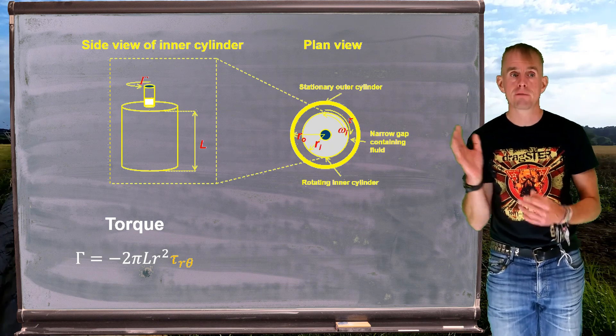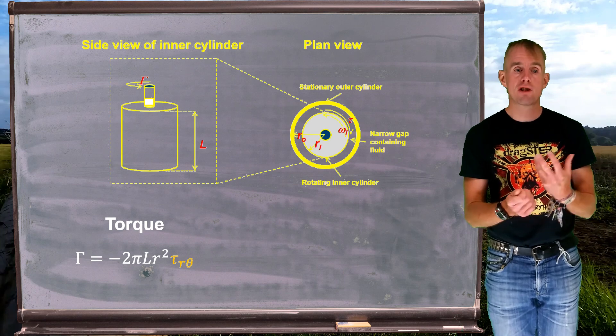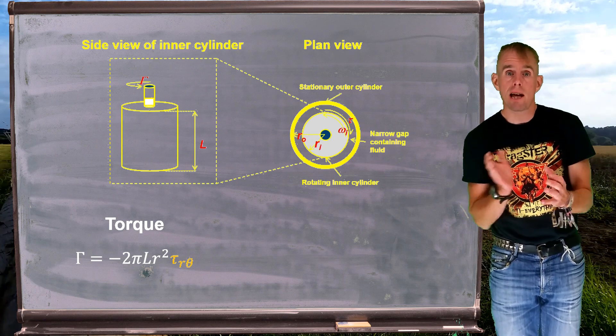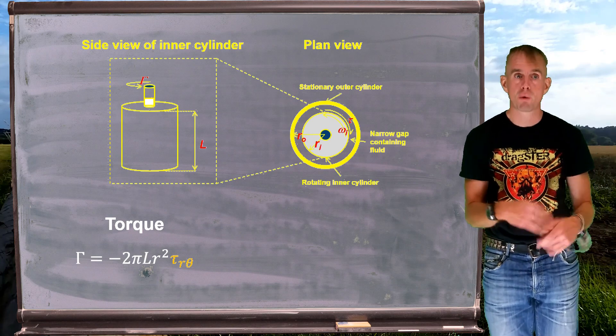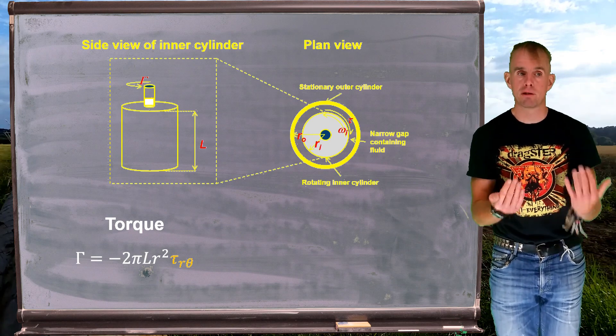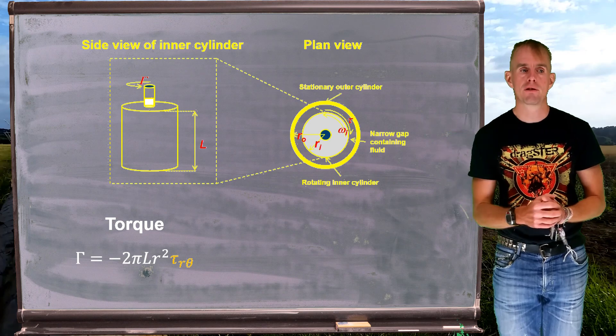So tau r theta refers to the inner cylinder, and it's the shear stress on the radial face in the theta direction, the rotation direction. Stress times area gives us a force, force times lever arm gives us a torque, hence we end up with this torque expression.